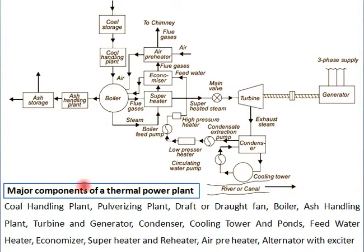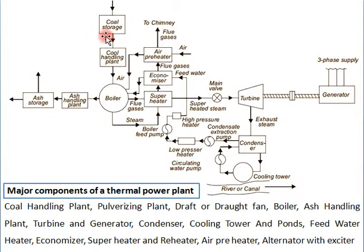Here you can see the major components of a thermal power plant. We start from the coal handling and pulverizing plant, where the coal is stored and then converted into small particles. Some impurities are removed inside this handling plant. Then it comes to the mill where it is pulverized and converted into very small particles — in the coal handling plant, the coal is converted into powder form.